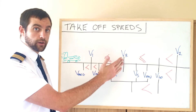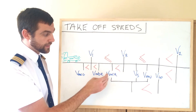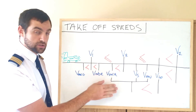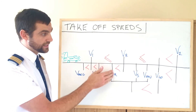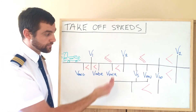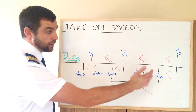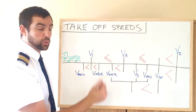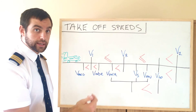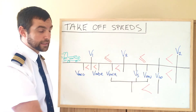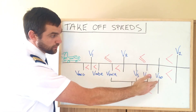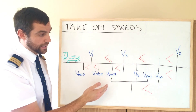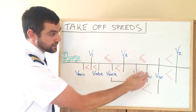Next, VR must always be greater than VMCA — in the same way as V1, we need to maintain directional control in the air to be able to start rotation, so it cannot be equal; it has to be greater. Our VLO speed has to be greater than or equal to VR — it can be equal, but should be greater normally. And it also must be greater than minimum unstick, stall speed, and VMCA — it must be greater than all those three.